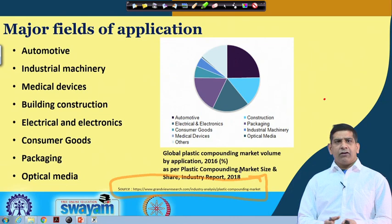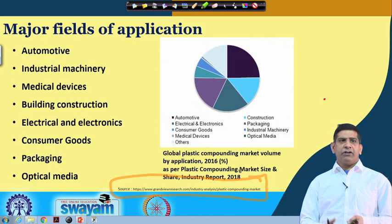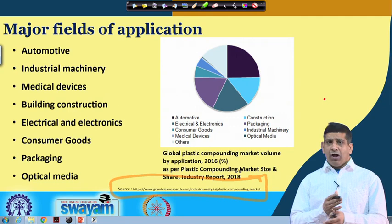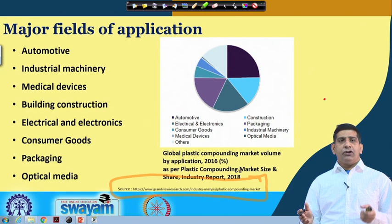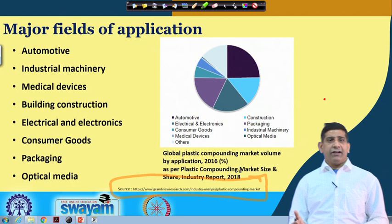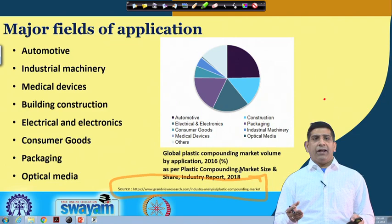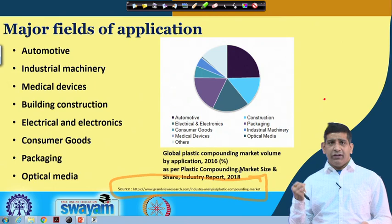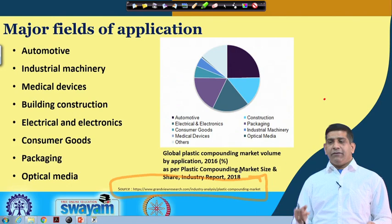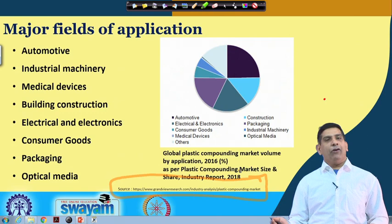Coming back to our topic: the major fields of application of plastic are automotive, industrial machinery, medical devices, building and construction, electrical and electronics, consumer goods, packaging, and optical media, along with other applications. Consumer goods include all the stuff we use — from toothbrush and toothpaste to electrical fixtures, wires, TV, microwave, most appliances, mixer grinder, cooking handles, and microwavable containers. If you take a 360-degree look around wherever you are sitting right now, you will find lots of plastic products.